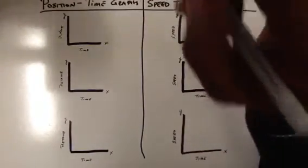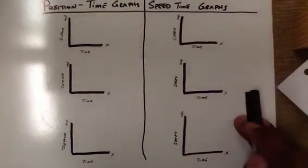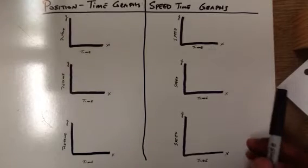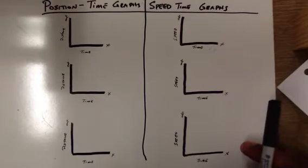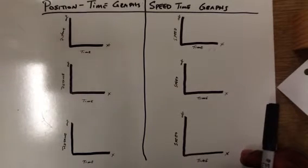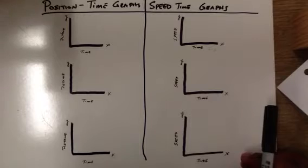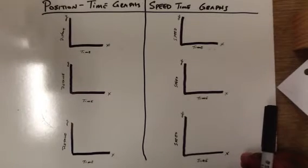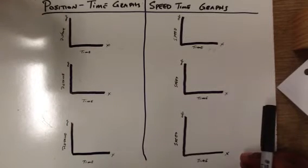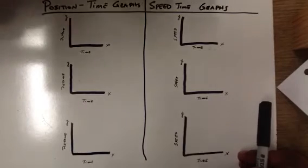This video is going to help you get a better grasp on the difference between position-time graphs and speed-time graphs, because there are differences between the two that students often confuse. But if you're paying close attention, you will not have a problem telling the difference. The first thing you want to do when you look at a graph is read the title, then look at the axes and determine whether you are dealing with a position-time graph or a speed-time graph.